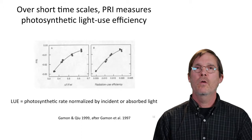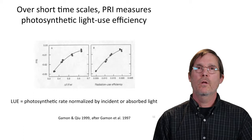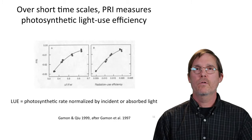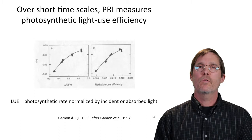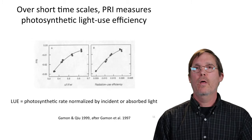In the right-hand panel we see a close relationship between PRI and the actual photosynthetic radiation use efficiency, or light use efficiency, often abbreviated LUE. This is expressed either as the photosynthetic rate normalized by incident light or normalized by absorbed light — people do it both ways.